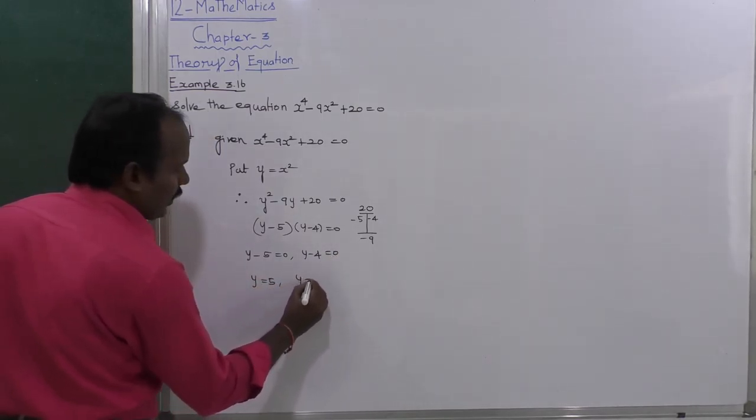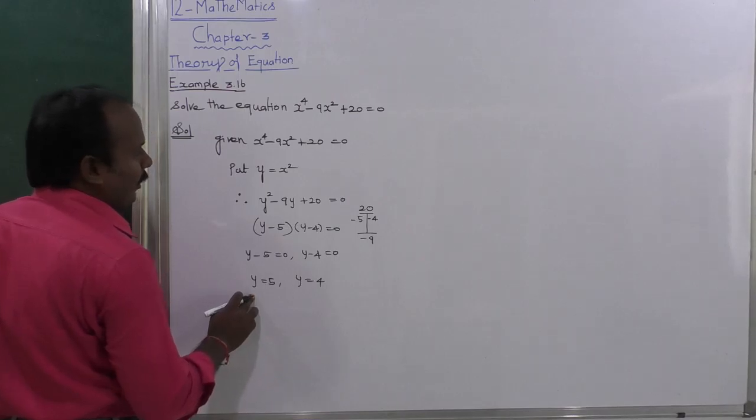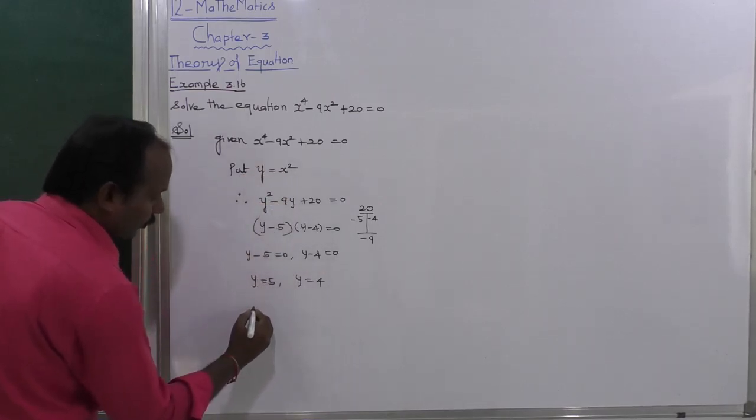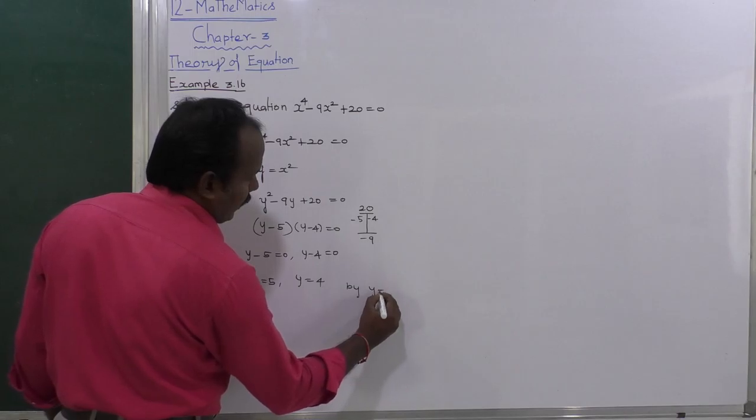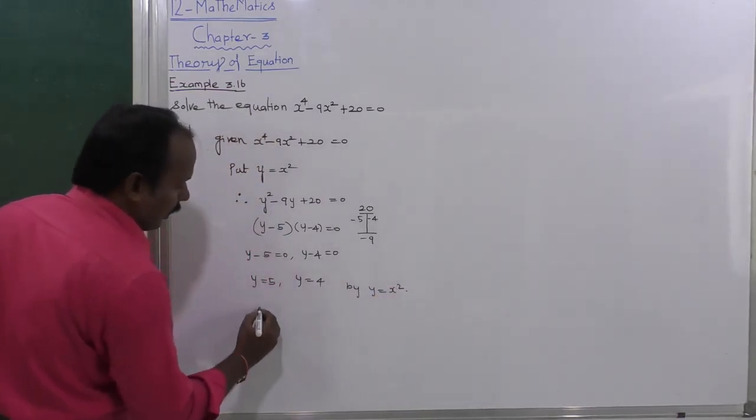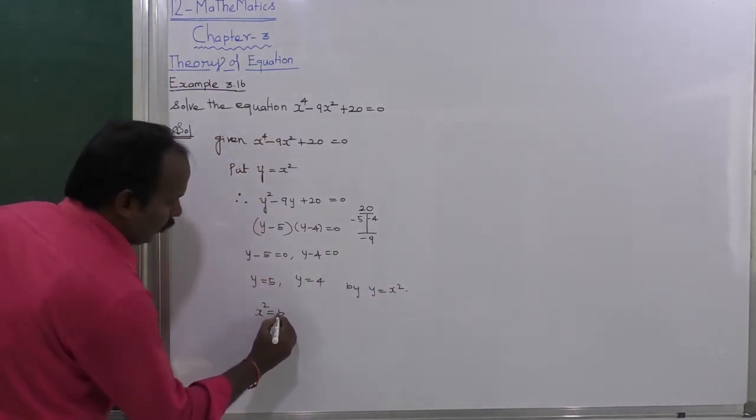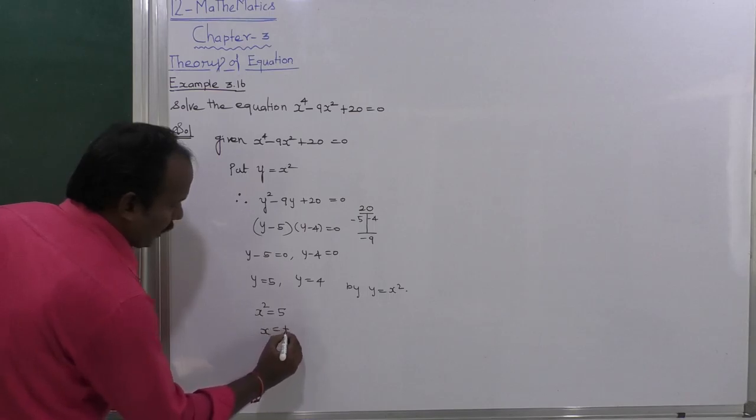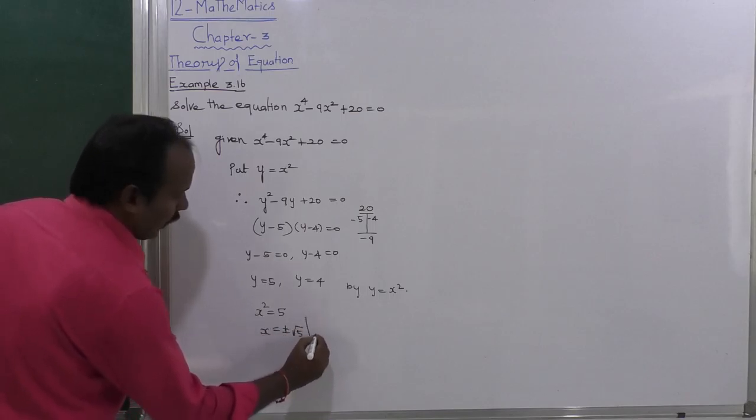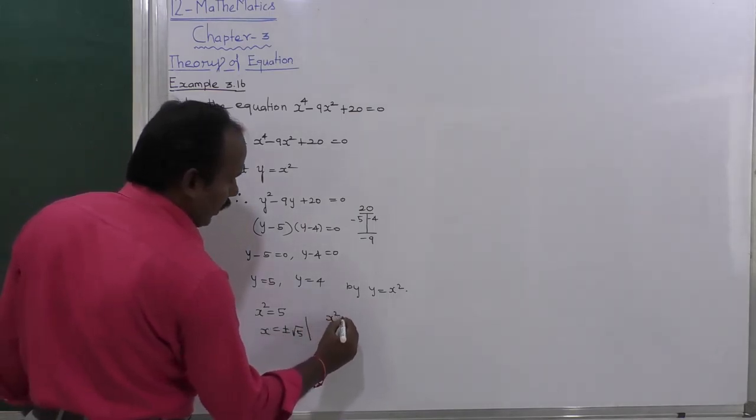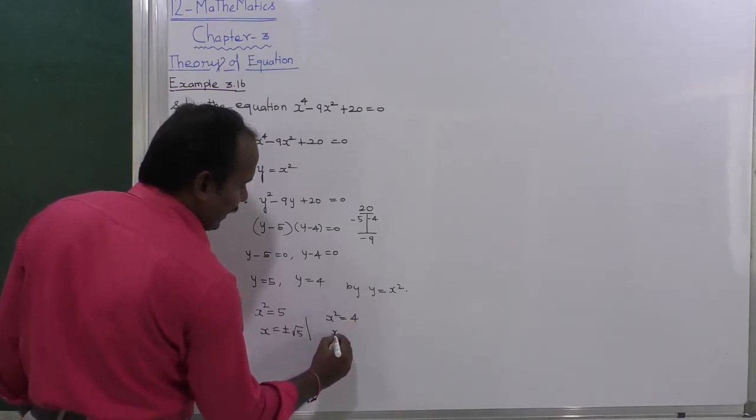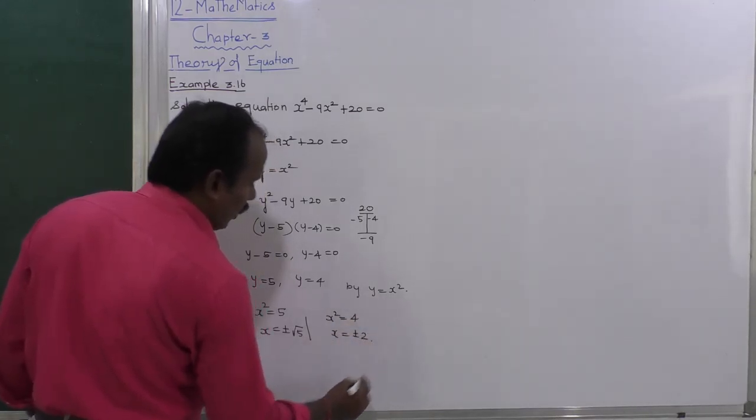Now replacing the value of y with x^2, using y = x^2, we have x^2 = 5 and x^2 = 4. Therefore x = ±√5 and x = ±2.